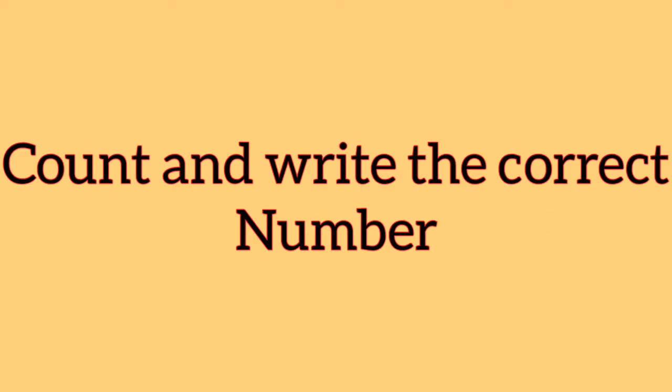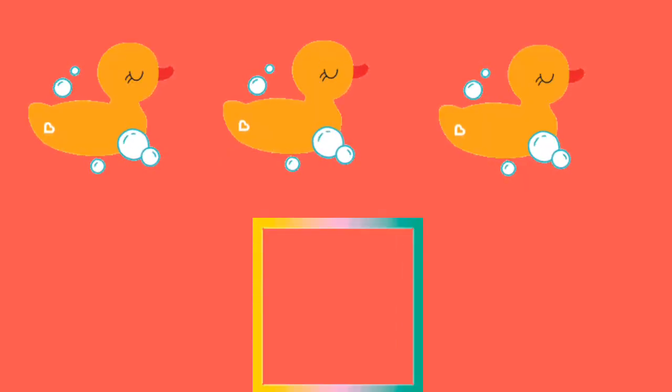We have to count and write the correct number. First we have some cute tiny duck legs, so we have one, two, three ducks. So write three in the box.